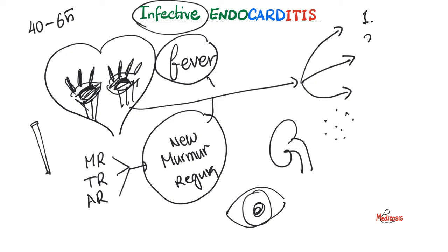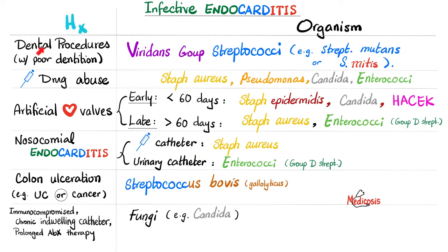The most common organisms causing infective endocarditis are staphylococci and streptococci, and the most common fungus is Candida. If the question mentions dental procedures with poor oral hygiene, think viridans group streptococcus — including Streptococcus mutans and Streptococcus mitis. If the patient has a history of IV drug abuse, think Staphylococcus aureus, Pseudomonas, Candida, and enterococci — but Staphylococcus aureus is most common.